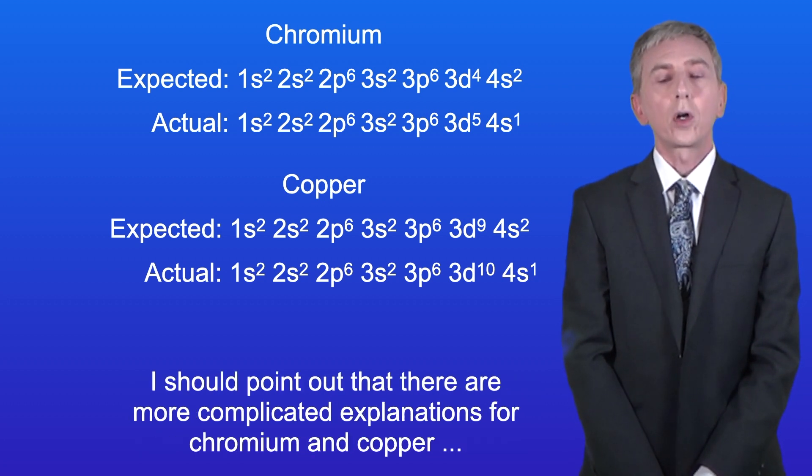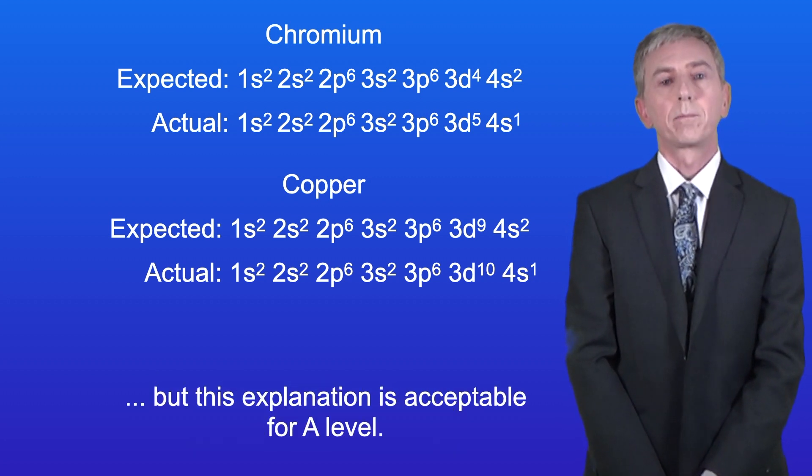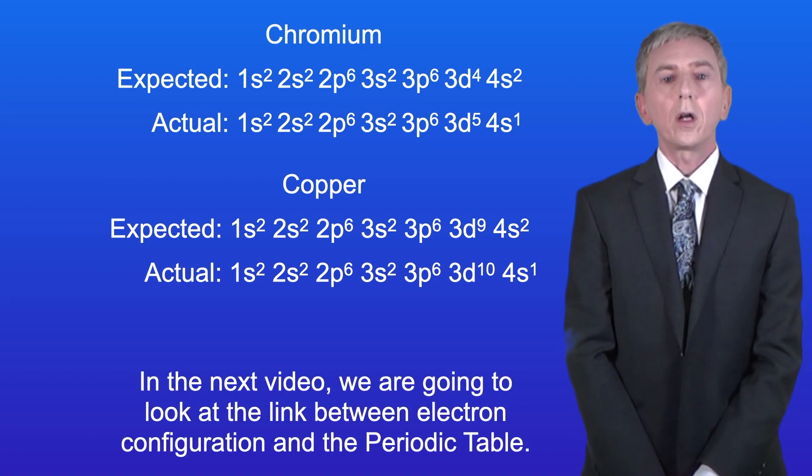Now I should point out that there are more complicated explanations for chromium and copper, but this explanation is acceptable for A-level. In the next video, we're going to look at the link between electron configuration and the periodic table.